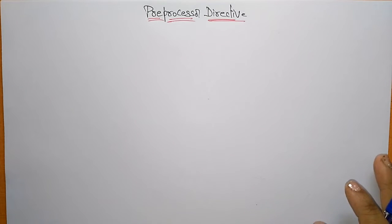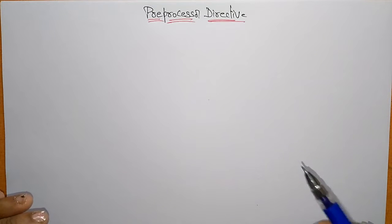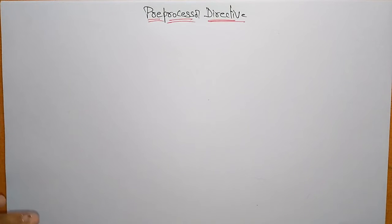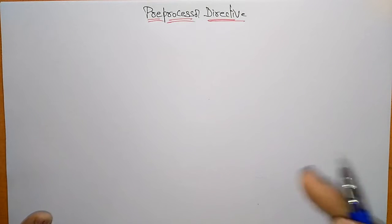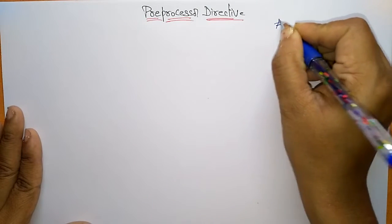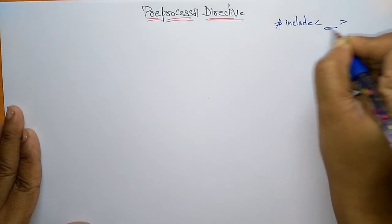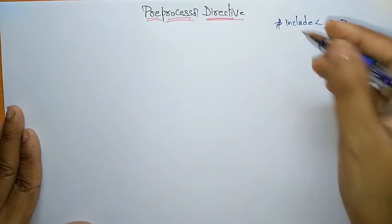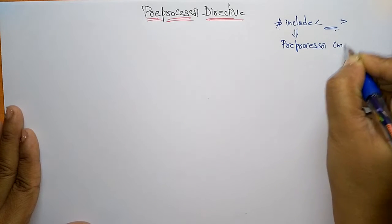Coming to the next topic in computer programming languages: preprocessor directives. I already explained each step using the hello world program example. The starting step of any C program is writing the preprocessor directive — a hash include command. This is called a preprocessor command, and you must include header files at the start of a C program.